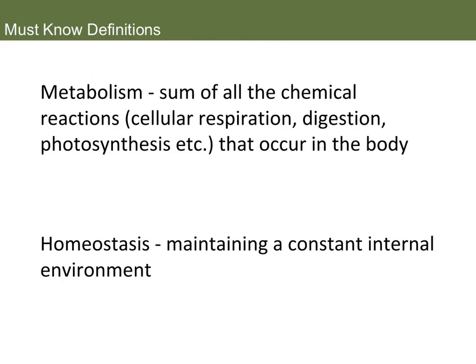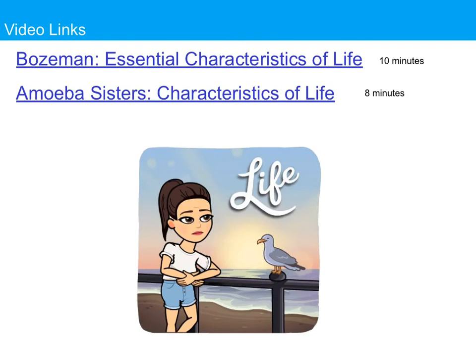A couple of terms from those properties of life that you should know are metabolism and homeostasis. Metabolism is the sum of all chemical reactions occurring in an organism — whether it's cellular respiration, digestion, or photosynthesis — all those energy-obtaining processes. Homeostasis is maintaining a constant internal environment. For us endotherms, we maintain 98.6 degrees. If you would like to learn more about the properties of life, there are two videos available for you.